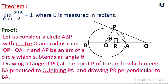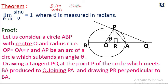Here: limit as theta tends to 0 of sin theta by theta equals 1, where theta is in radians. We are solving limit as x tends to 0 of sin x by x equals 1. This is a most important result. If you want the limit as theta tends to 0 of sin theta by theta, the answer is 1.